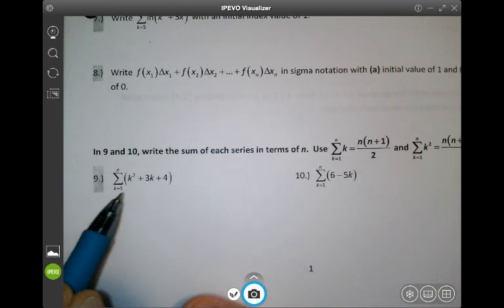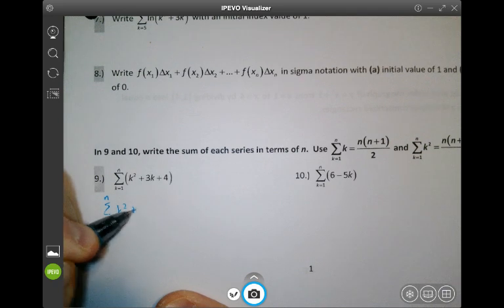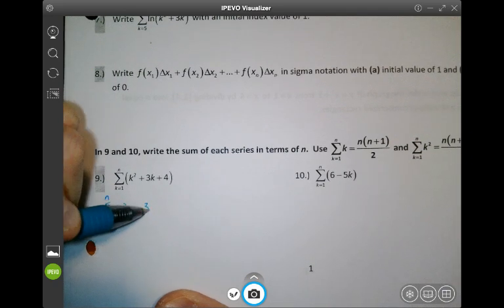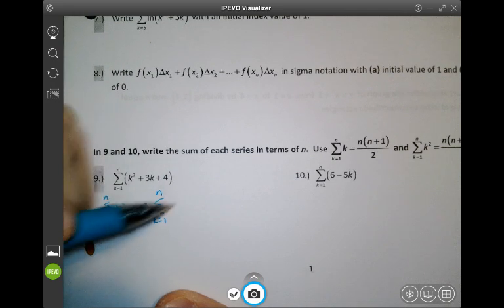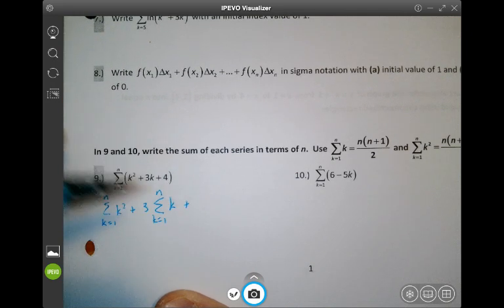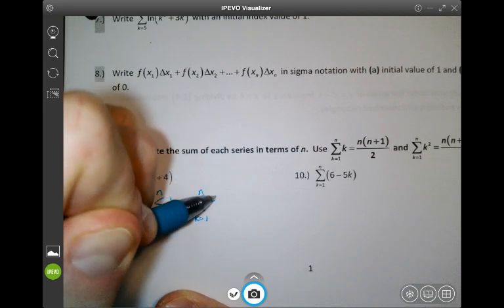And so that means we're going to take the sum from k equals 1 to n of k squared plus three times the sum from k equals 1 to n of k and then plus the sum from k equals 1 to n of 4.